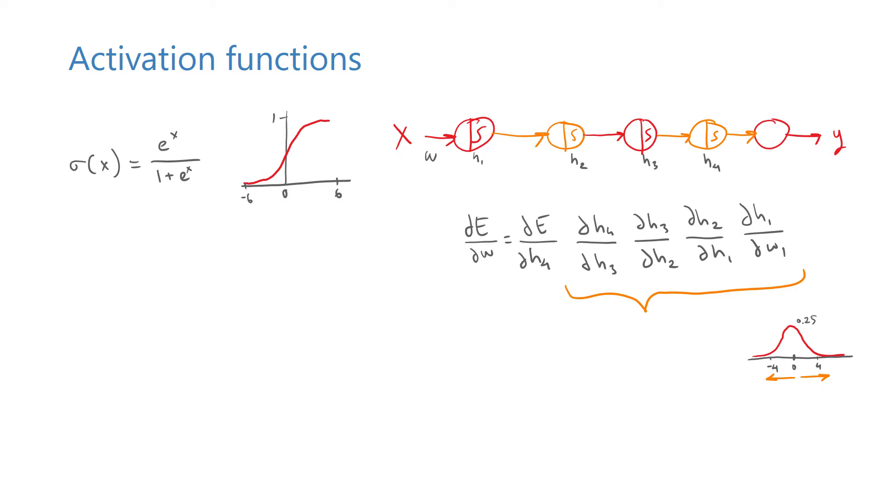As we back propagate the error by chaining these expressions, the magnitude of the gradient rapidly diminishes. The more sigmoids we encounter along the back propagation path, the smaller the gradient gets. In deeper models, the derivatives get so small towards the earlier layers that it becomes virtually impossible to update the early layer parameters.